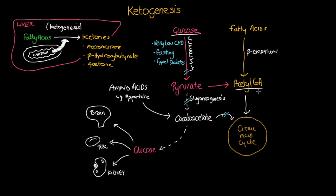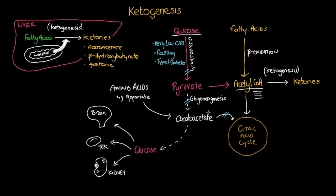This creates an issue as it leads to a backup of acetyl-CoA entering the citric acid cycle. This, however, is overcome by ketogenesis, which has the capacity to reduce this buildup by converting excess acetyl-CoA into ketones. In short, a deficit in supply of oxaloacetate to the citric acid cycle triggers ketogenesis within the liver.